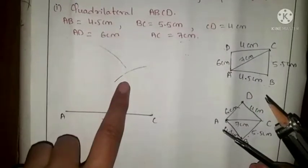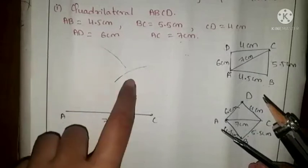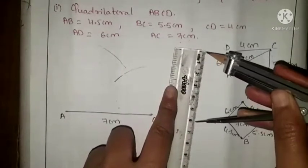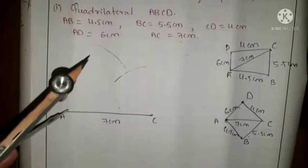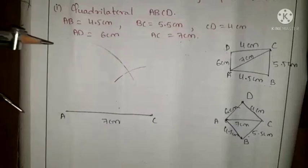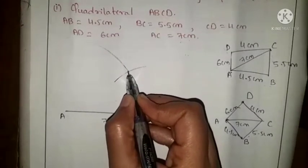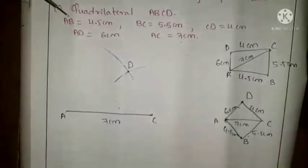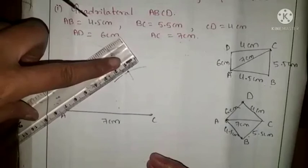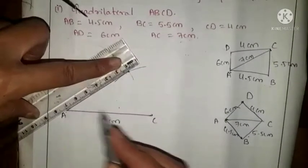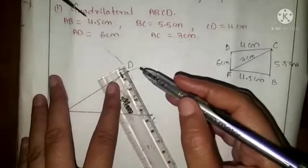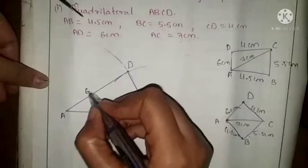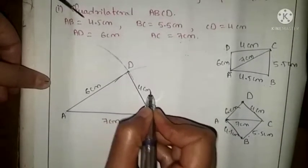If the two arcs do not intersect, that is not wrong — we have to extend them until the two arcs intersect. Take the 6 cm radius again and extend the arc to make them intersect. The two arcs are now intersected, and this intersection point is our point D. Now join A to D and C to D. AD = 6 cm and CD = 4 cm. The first triangle ACD is complete.